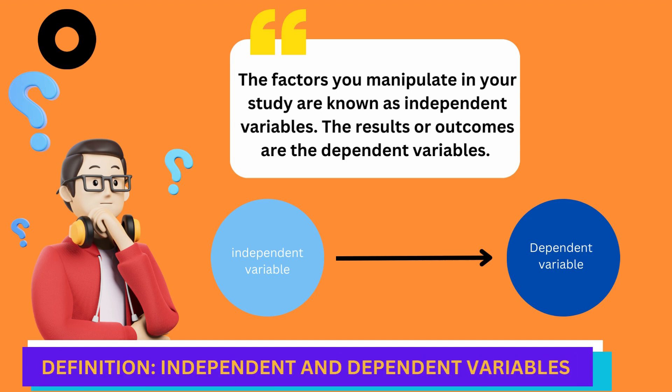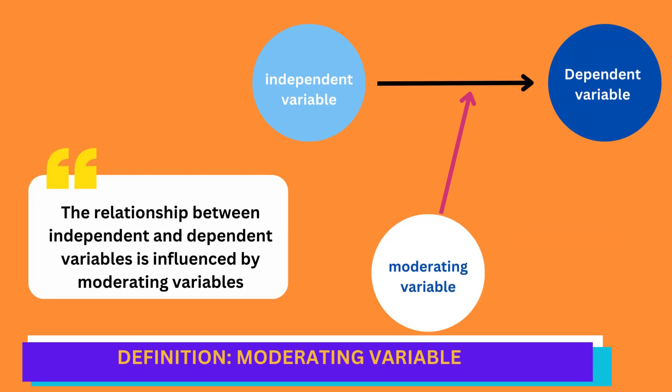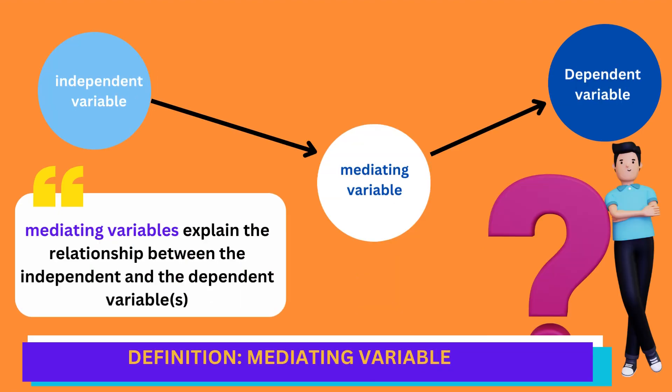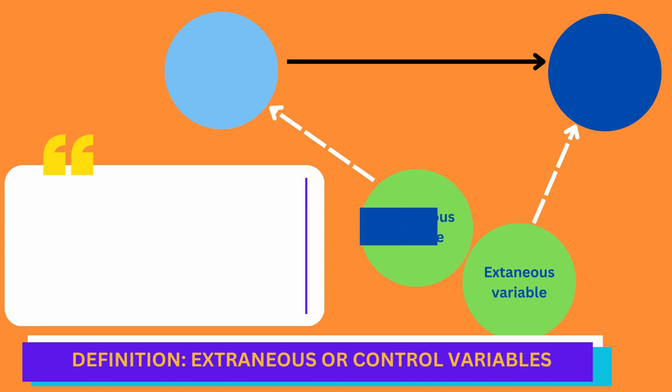The factors you manipulate in your study or expect to have influence on other factors are known as independent variables. The outcome or outcomes of your study are the dependent variable or variables. The relationship between independent and dependent variables is influenced by moderating variables, whereas mediating variables explain how or why this relationship exists. Control or extraneous variables may have an effect on the relationship between the independent and dependent variables, but are not the focus of your research.